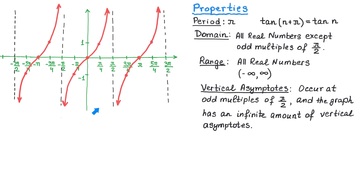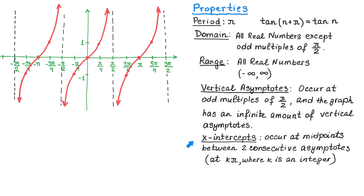The tangent function has vertical asymptotes at odd multiples of pi over 2, and the graph has an infinite amount of vertical asymptotes. Notice that this graph does not have any horizontal asymptotes. Now, the x-intercepts occur at midpoints between two consecutive asymptotes. We can also say that the x-intercepts occur at k multiplied by pi, where k is an integer — meaning at pi, 2 pi, 3 pi, 0, negative pi, negative 2 pi, and so on. Additionally, from the x-intercept, going halfway to the right toward the asymptote, the tangent equals positive 1. Going halfway to the left toward the asymptote, the tangent equals negative 1.